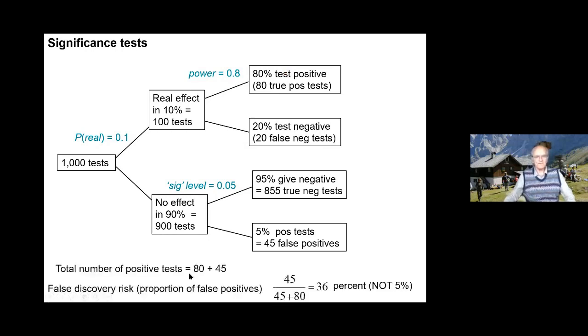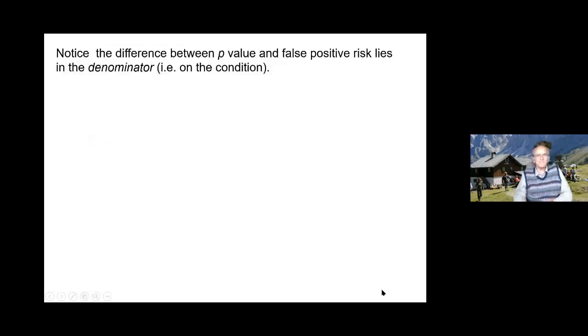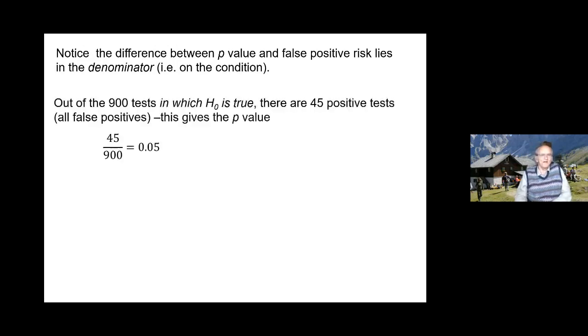The total positive tests is 80 plus 45, and the false discovery risk is the number of false positives divided by the total number of positives, which is 36%. So the p-value is not the false positive risk. The difference lies not in the numerator, it lies in the denominator.